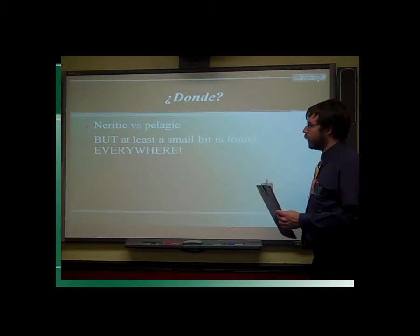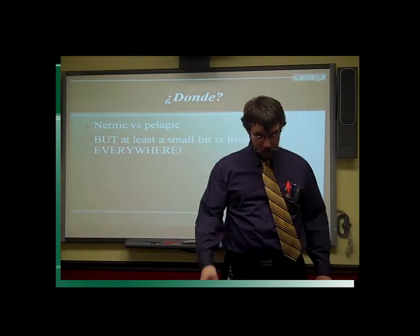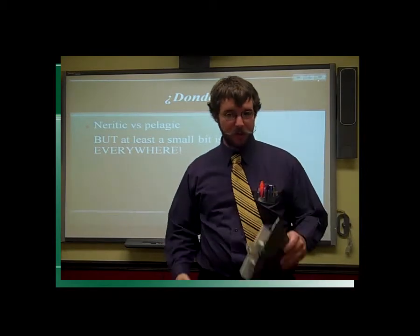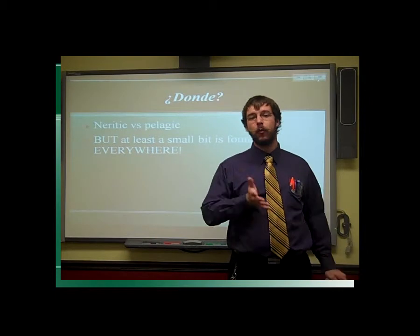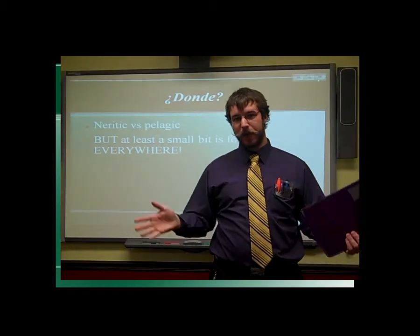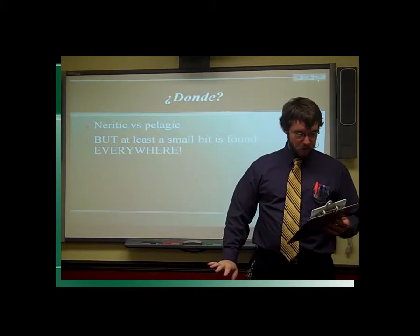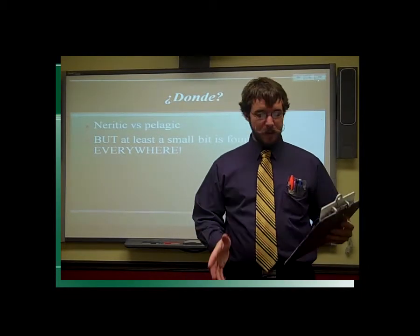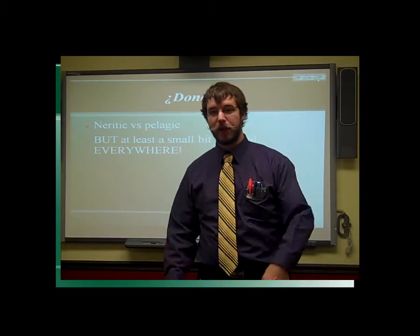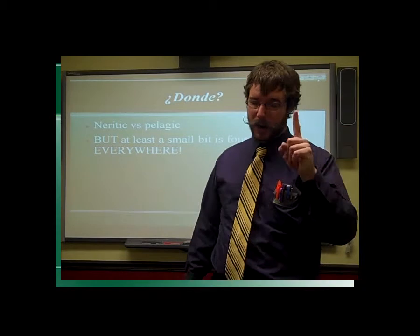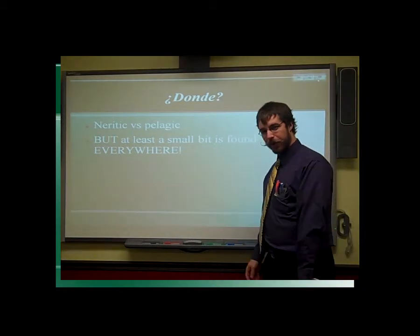Now we need to talk about neritic versus pelagic. Keep in mind that you do find small bits everywhere. Anything that's neritic is shallow water — that's technically a coastal region inside your continental margin, that would be the neritic zone. Pelagic regions are deep under the ocean floor, in the deep ocean basin. So anything we talk about being pelagic is found in the deep ocean basin, and anything neritic — not neurotic, but neritic — is in the continental margin.